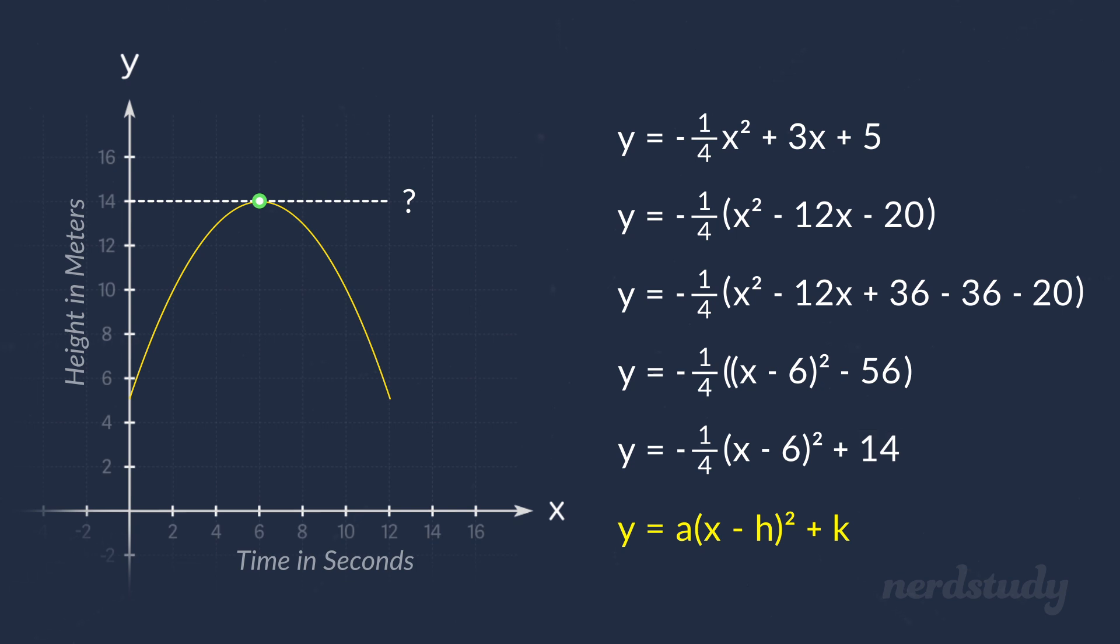So, the coordinates of the highest point of this parabola is 6, 14. This means that the highest point of the ball is at 14 feet, and it occurs after 6 seconds has gone by. Awesome!